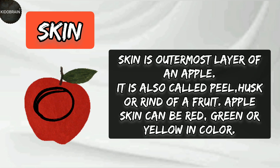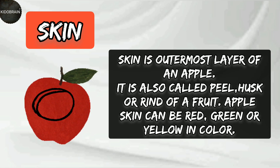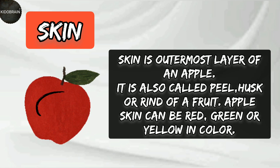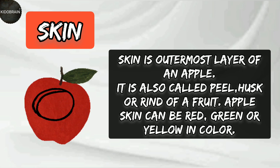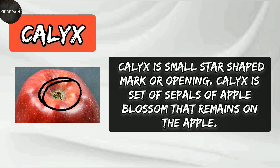Skin: skin is the outermost layer of an apple. It is also called peel, husk, or rind of a fruit. Apple skin can be red, green, or yellow in color. Calyx: calyx is a small star-shaped mark or opening. Calyx is the set of sepals of the apple blossom that remains on the apple.